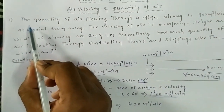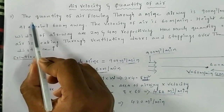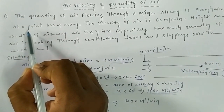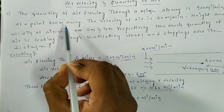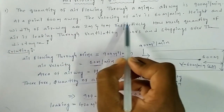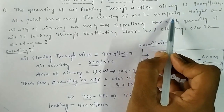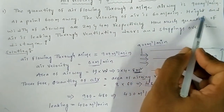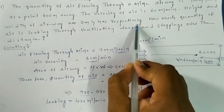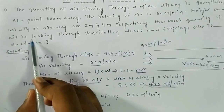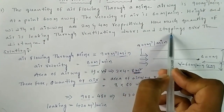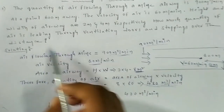Here is the problem: the quantity of air flowing through a mine airway is 900 cubic meters per minute. At a point 600 meters away, the velocity of air is 60 meters per minute. The height and width of the airway are 2 meters and 4 meters respectively. How much quantity of air is leaking through ventilation doors and stoppings over the distance?